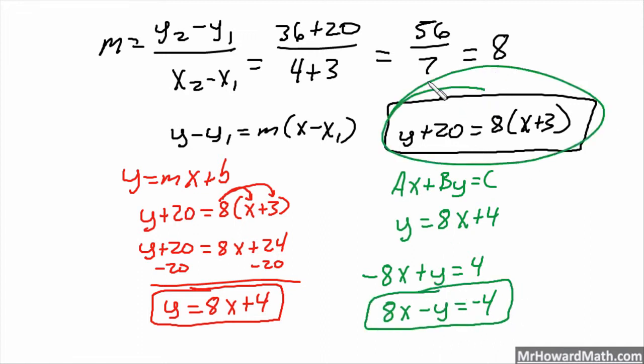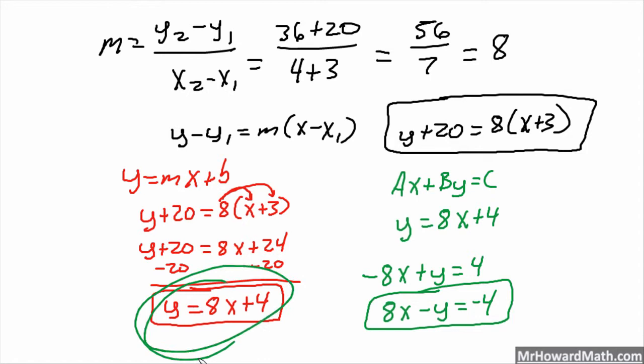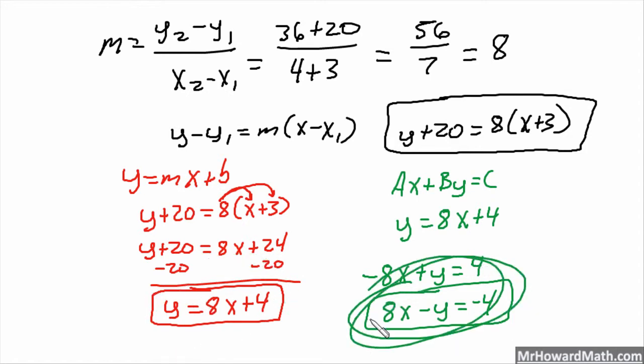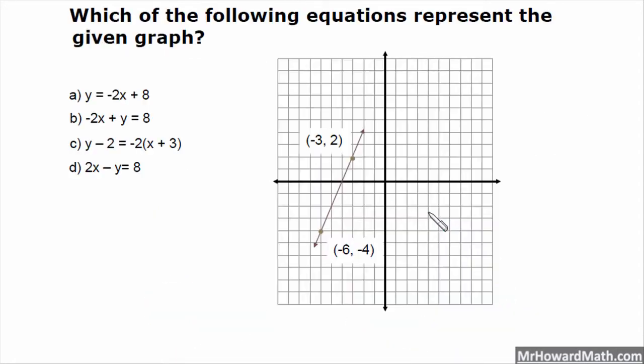So point-slope here, slope-intercept here, and standard form here — all for the same one.